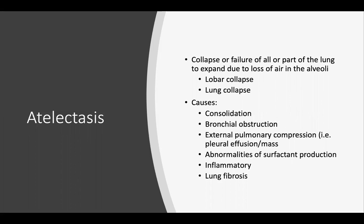Other signs indicating decreased lung volume include displacement of the mediastinum or trachea towards the collapsed lung, elevation of the hemidiaphragm, and compensatory overinflation of adjacent lobes or the opposite lung. Causes of atelectasis include consolidation, bronchial obstruction by an endobronchial tumor, mucus plugging of major airways, other tumors, lymphadenopathy, aneurysm compressing the bronchi, inhaled foreign body like peanuts, or iatrogenic causes such as an endotracheal tube inserted too far. External pulmonary compression from pleural effusion or mass, and abnormalities in surfactant production such as in oxygen toxicity and ARDS, may also cause atelectasis.